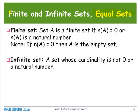More terms: finite, infinite, and equal sets. For the finite set, set A is a finite set if n of A is zero, that means no member. That pretty much means A is an empty set.